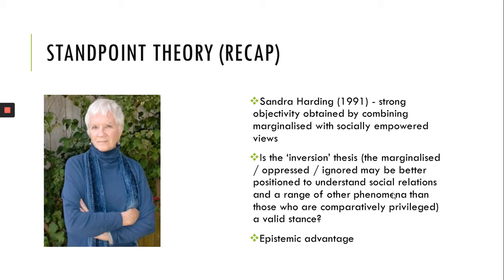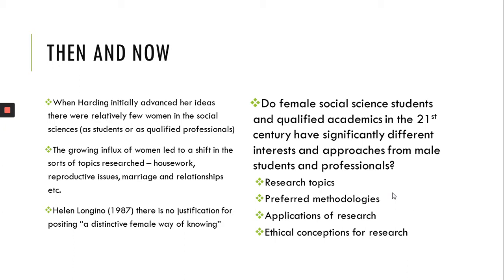When Sandra Harding started out as a young woman in academia, there were relatively few women in the social sciences and even fewer in the hard sciences — what these days is referred to as STEM. Part of her argument, formulated in those early days, was that because the majority of students, lecturers, and working researchers were men, they de facto tended to research things that interested them.